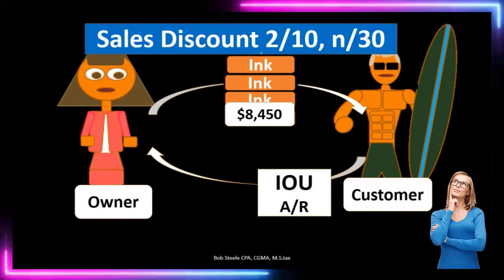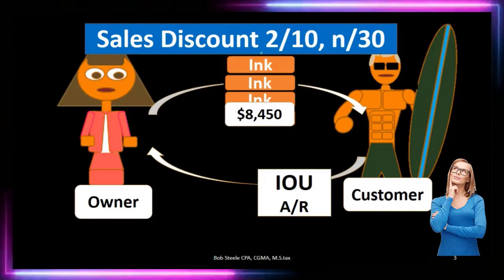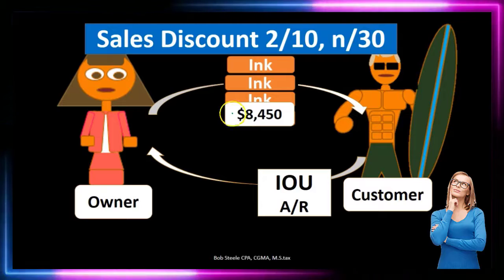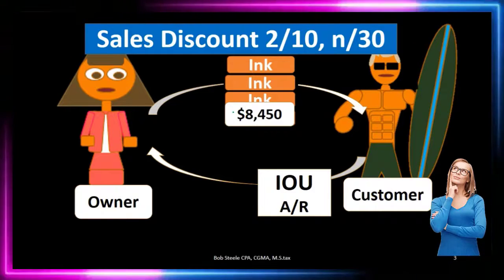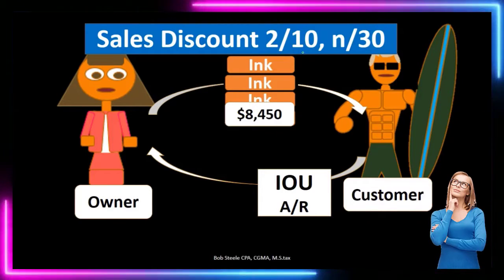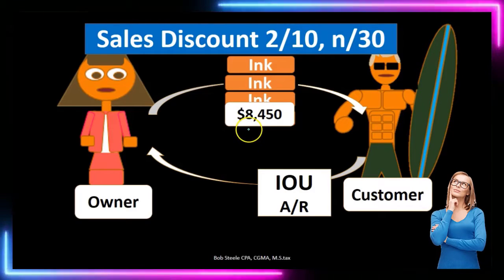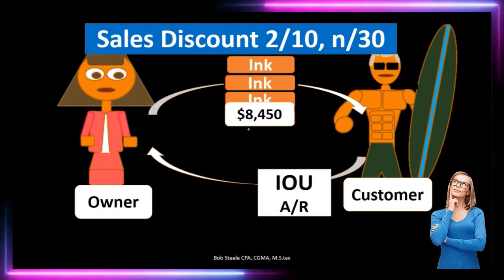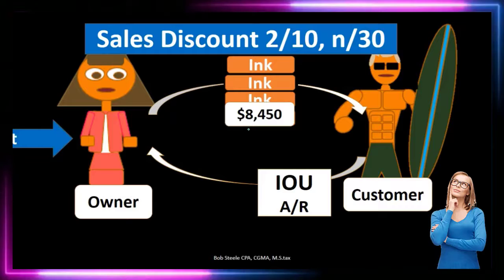In that case, we usually put it on the books when we make the sale as if we don't have the discount period — meaning we're going to put the entire sticker price on the books. If the customer then paid within the discounted time period, meaning within the 10 days, we would have to account for that 2% discount. The customer wouldn't be paying the full $8,450 because they paid within that 10-day period — we'd have to reduce it by 2% of $8,450.